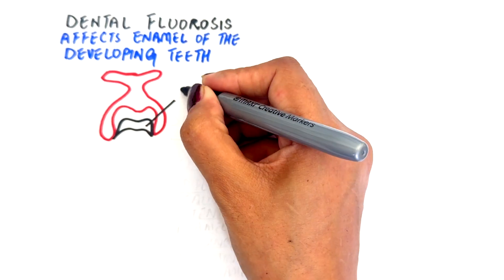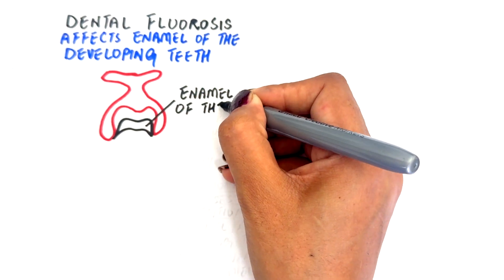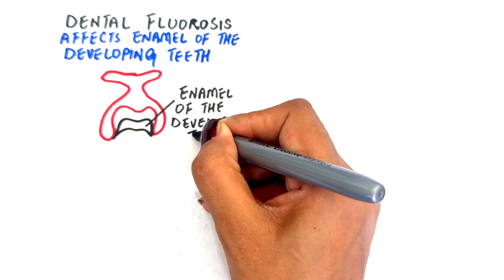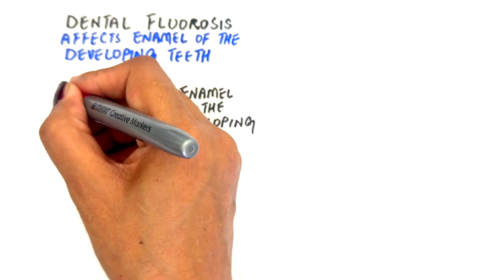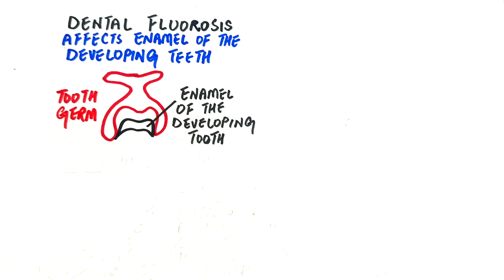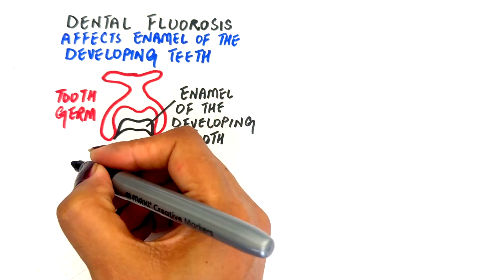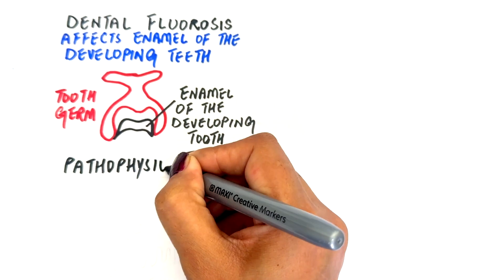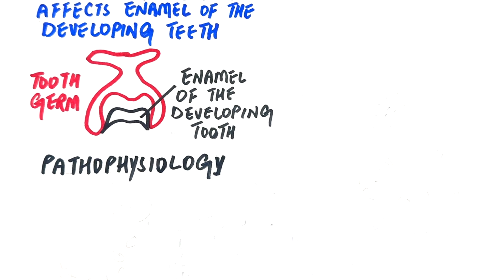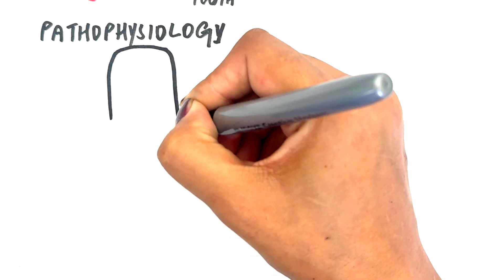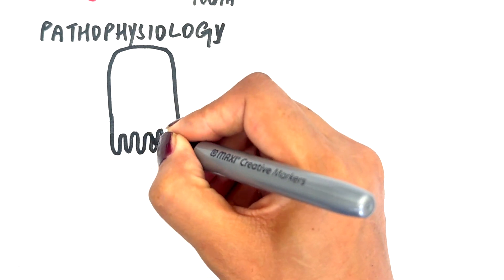Dental fluorosis affects enamel only and only during tooth development — which is why it can also be called enamel fluorosis or mottled enamel. Looking at the pathophysiology, during the transition and early maturation stages of enamel development, ameloblasts lay down a protein-rich matrix primarily composed of amelogenin.